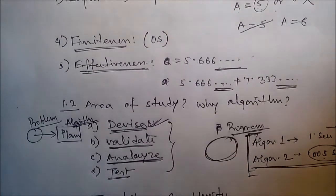Next is validation. Once an algorithm is devised, it is necessary to show that it computes the correct answer for all possible legal inputs. We refer to this process as algorithm validation.